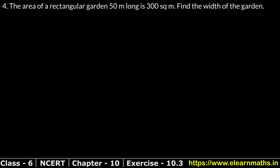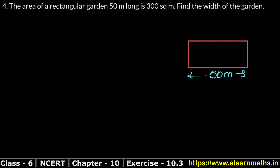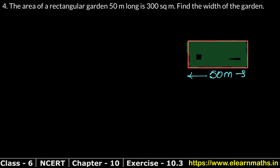Let's do question number 4 of exercise 10.3, a mensuration problem. Question 4: the area of a rectangular garden 50 meters long is 300 square meters. This is a rectangular garden which is 50 meters long and its area is 300 square meters.